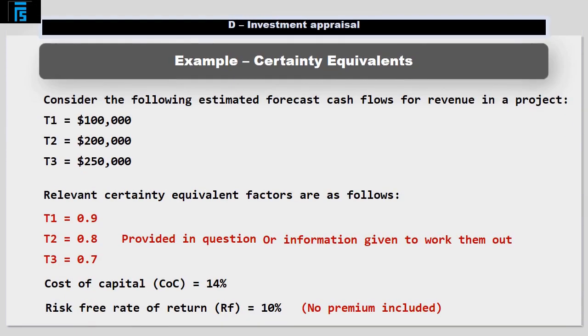Let's consider how this might be examined. Consider the following estimated forecast cash flows for revenue in a project: T1 $100,000, T2 $200,000 and T3 $250,000. Relevant certainty equivalent factors are as follows. These certainty equivalent factors would need to be given to you in the question, or at least you would have to be given enough information to be able to work them out.